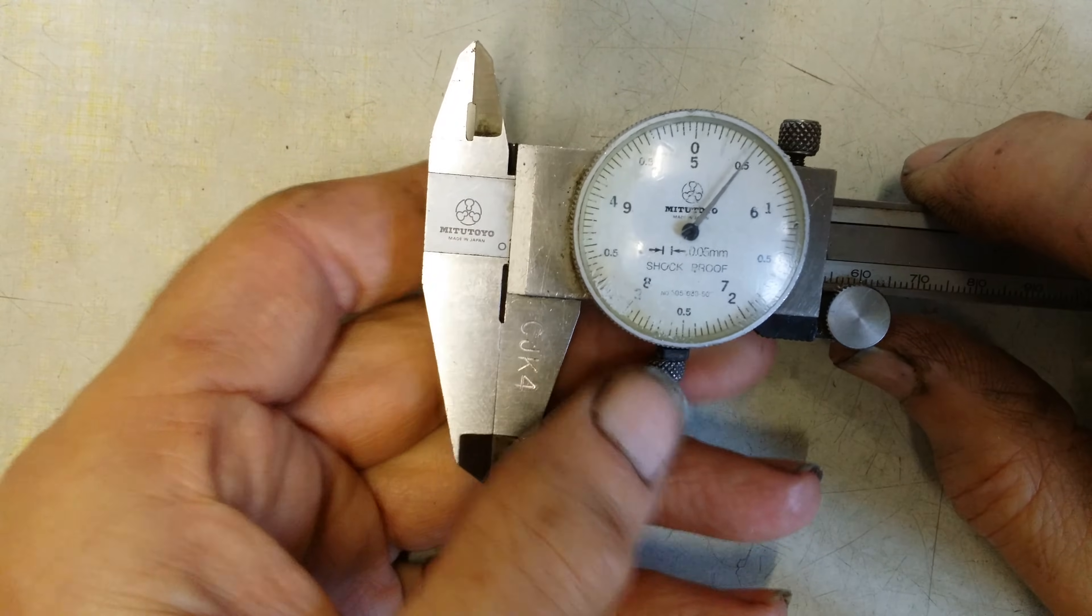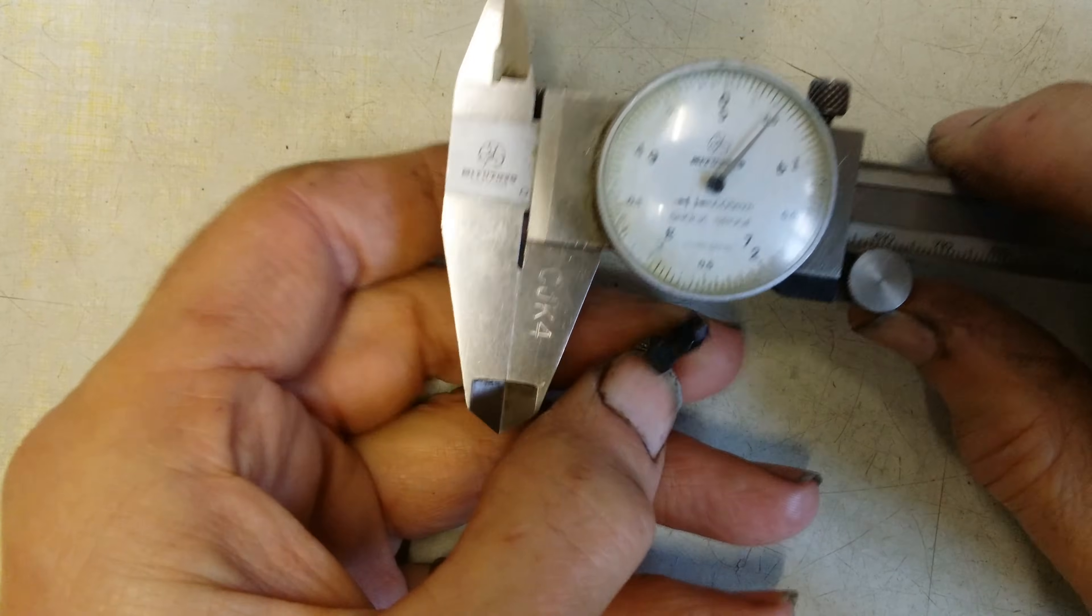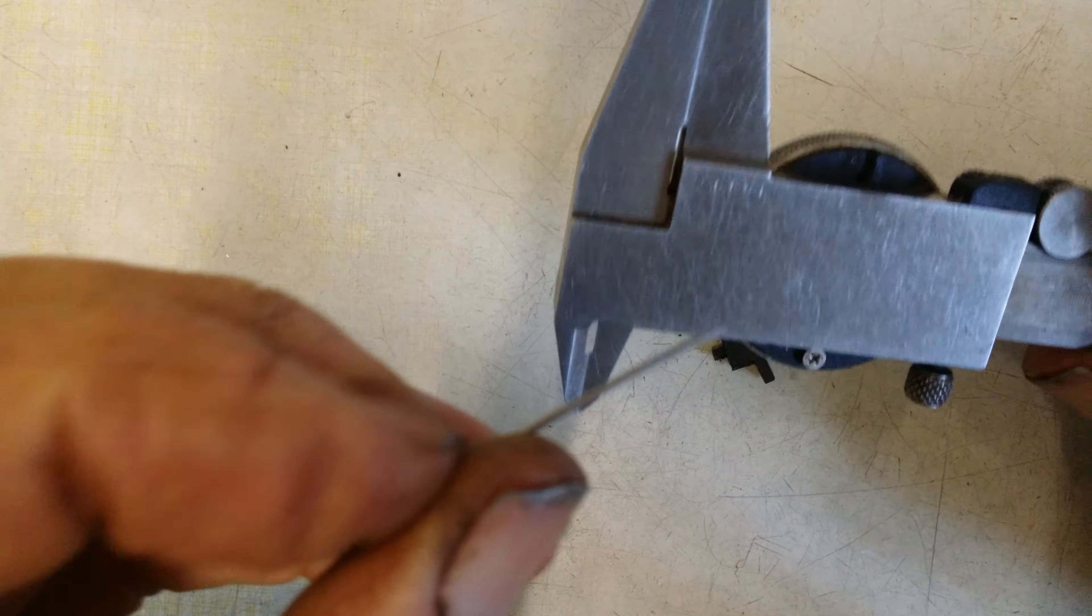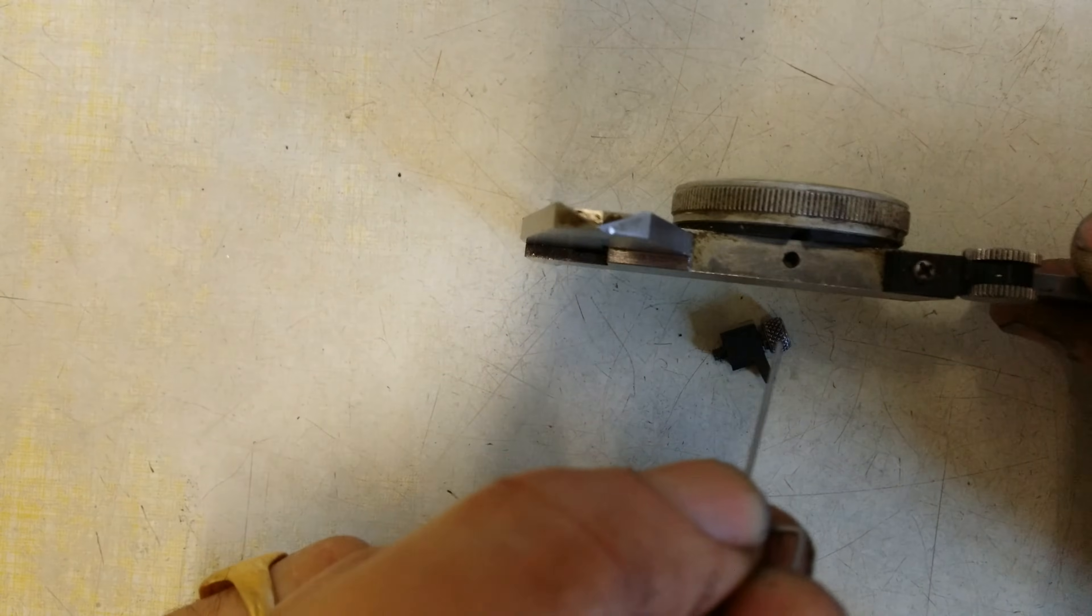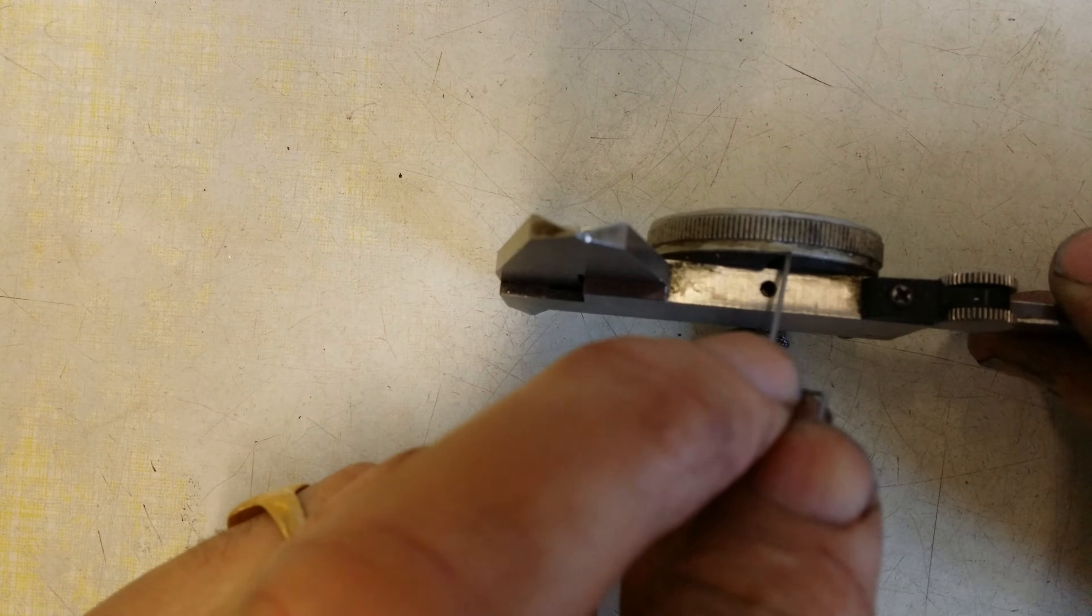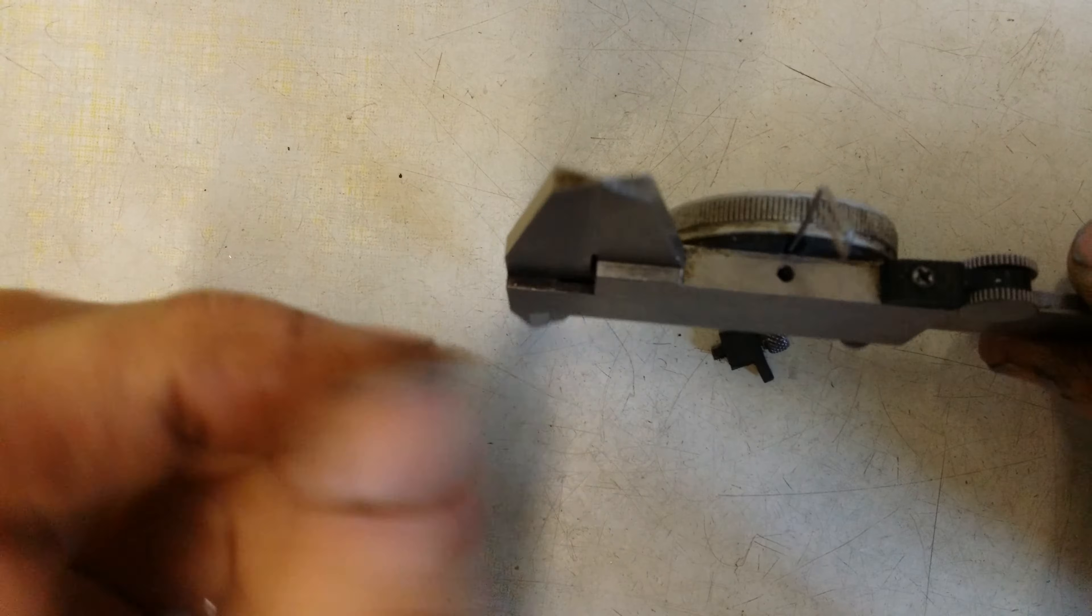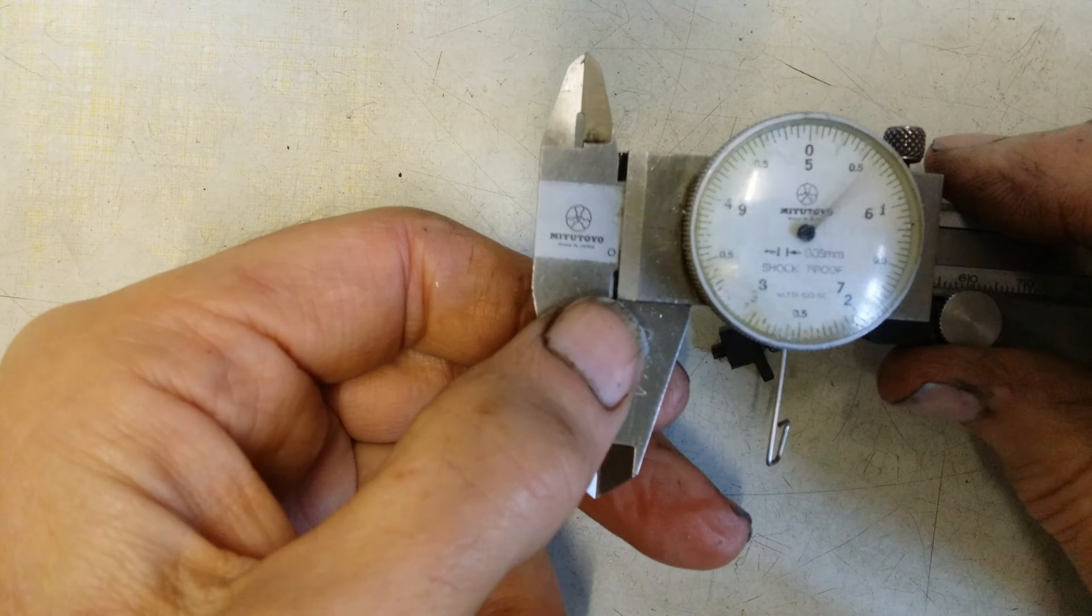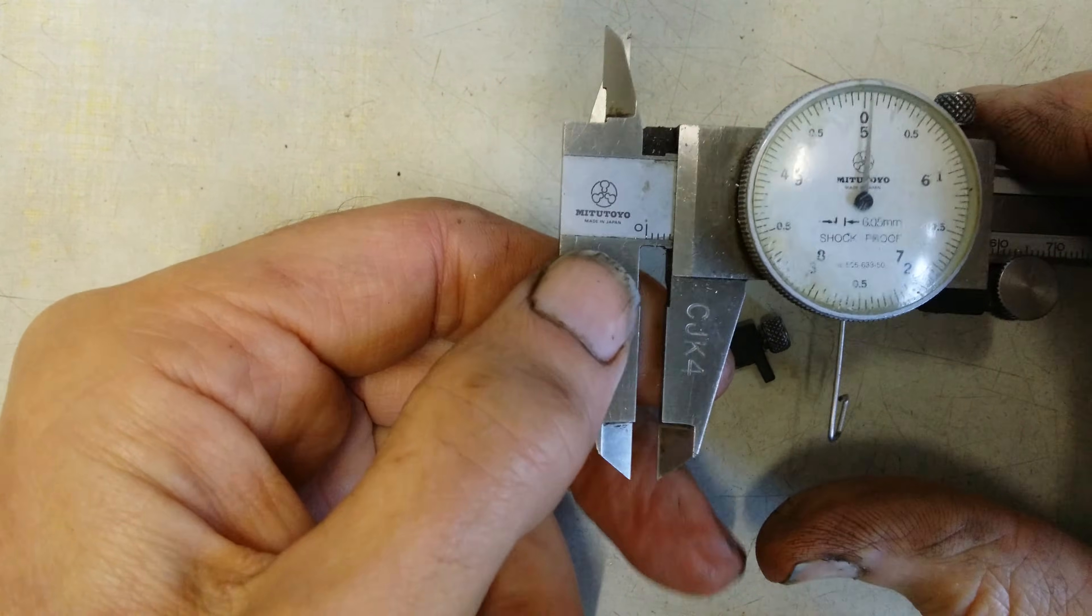If you undo that screw and pull out the piece, underneath there—I don't know if you can see it, just there—there's a little groove that it fits in. Now what that does is allows you to disengage the rack.